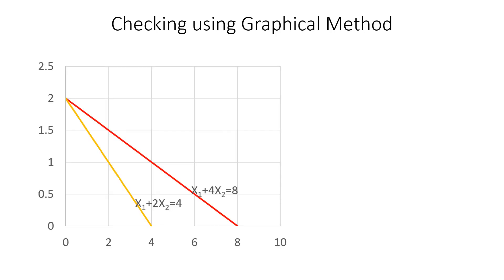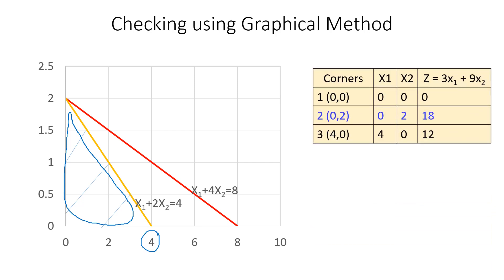Combining the graphs, the feasible solution space region is identified. The corner points are: the origin (0, 0), the point (0, 2), and the point (4, 0). Evaluating the objective function at each corner point: at (0, 0) Z = 0; at (0, 2) Z = 18; at (4, 0) Z = 12. The maximum value is Z = 18 at corner point (0, 2), confirming our simplex result.